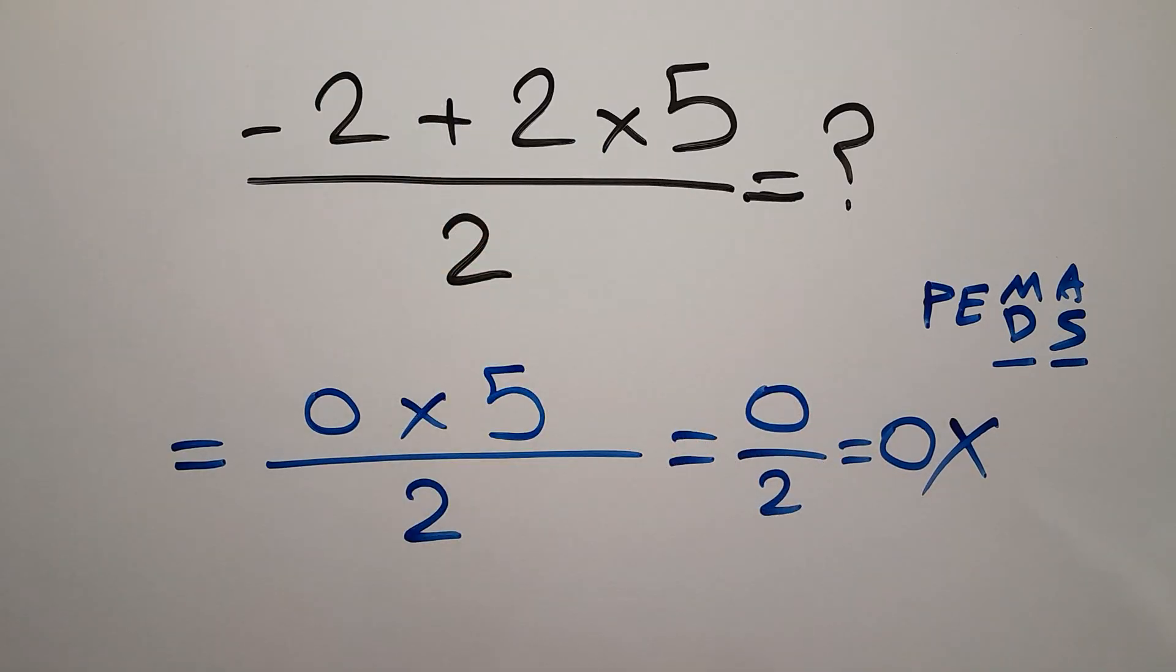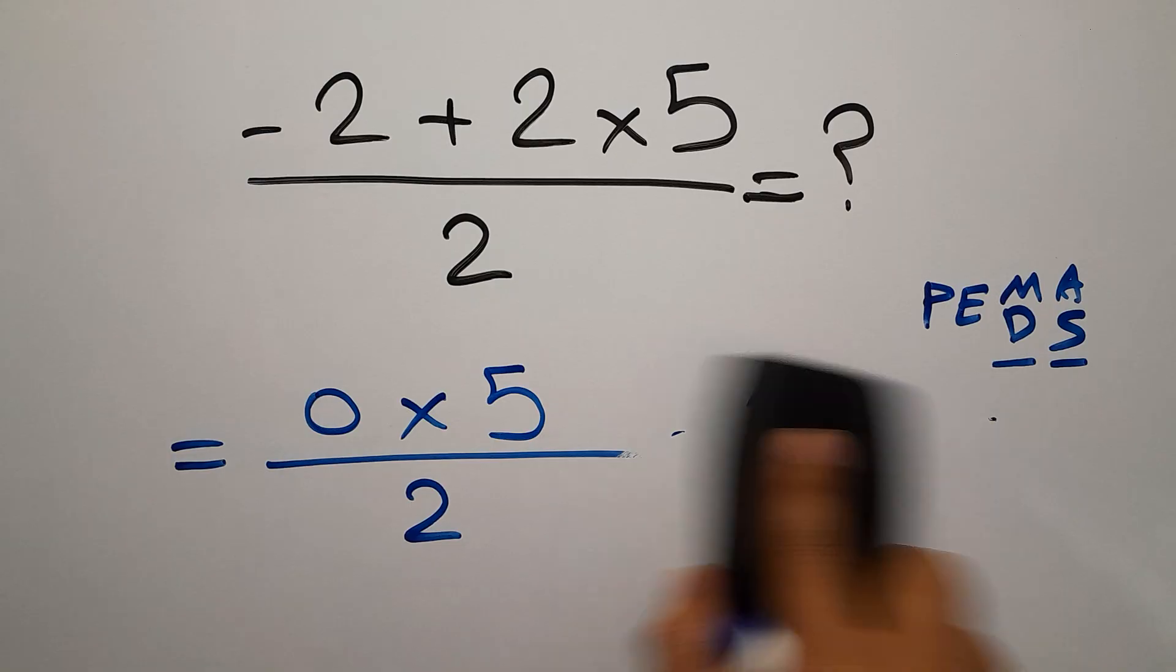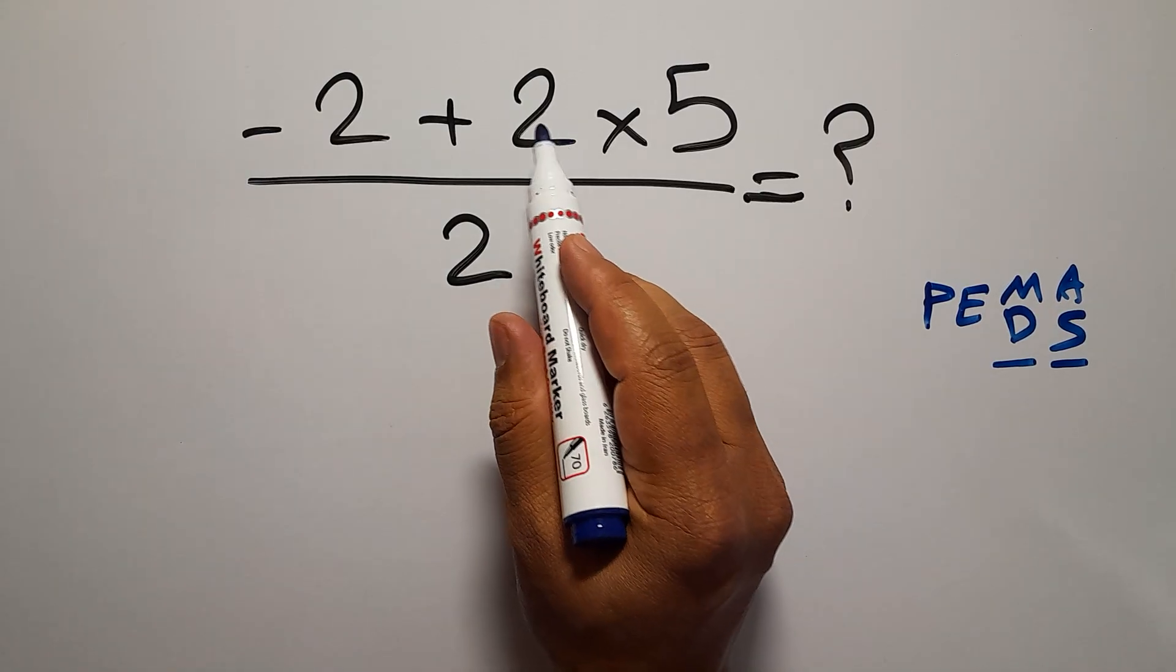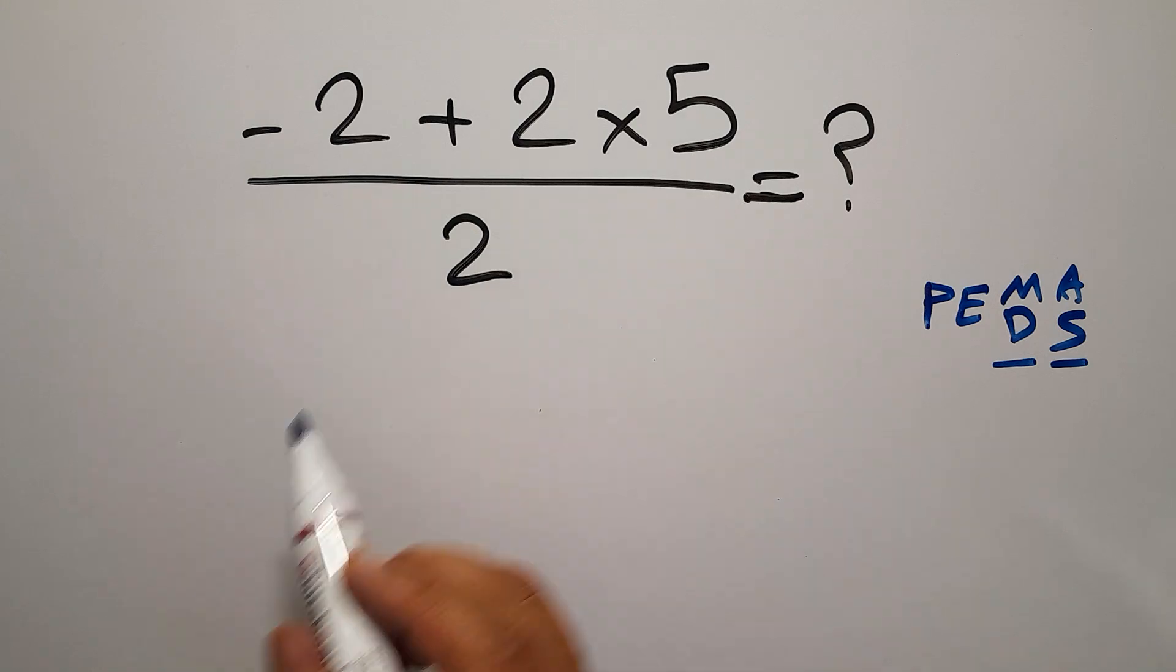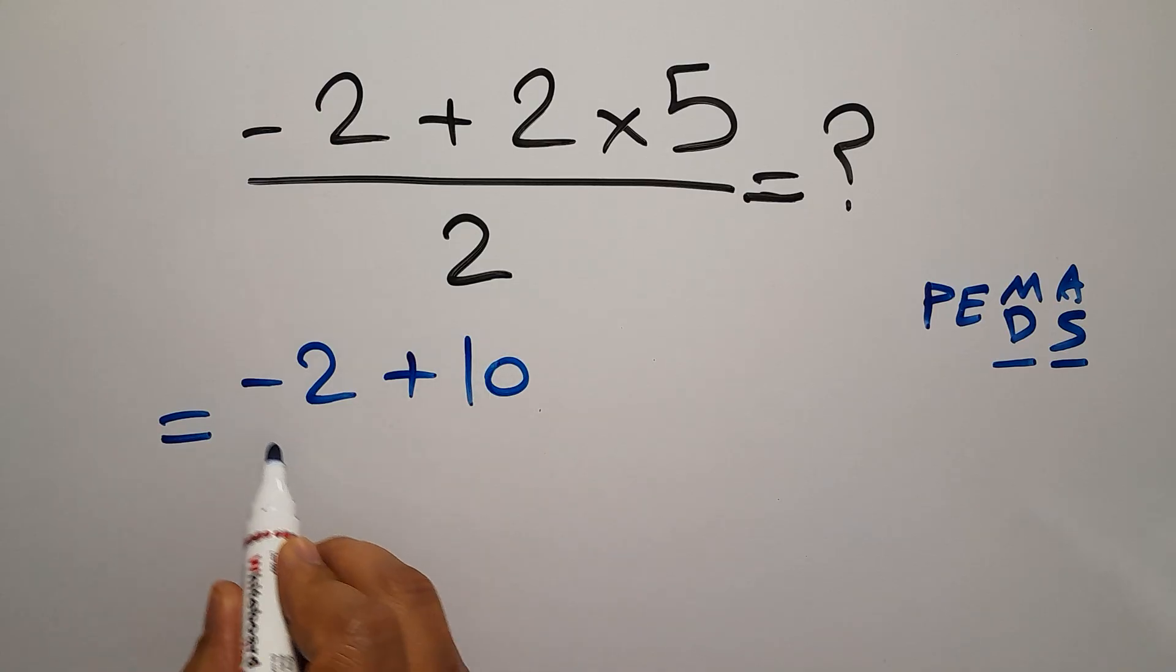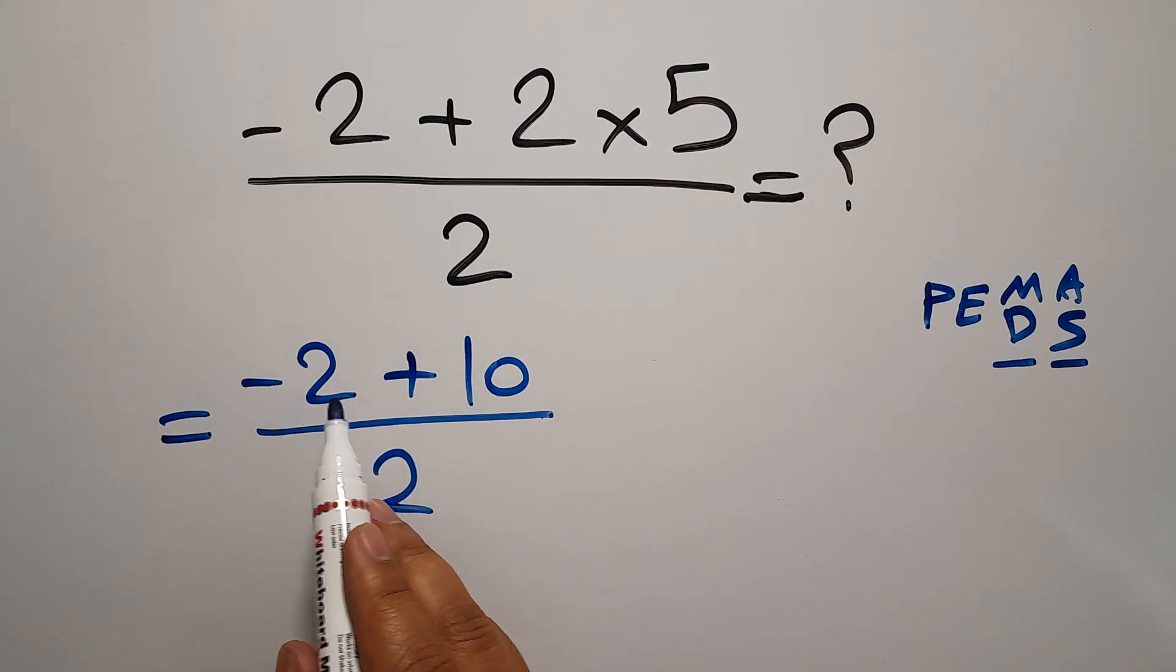So 2 times 5 gives us 10. Our fraction equals negative 2 plus 10 over 2. Negative 2 plus 10 gives us 8.